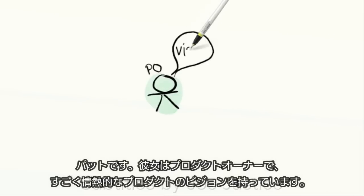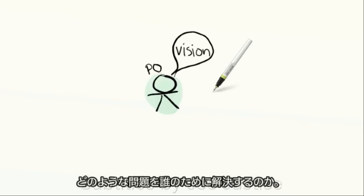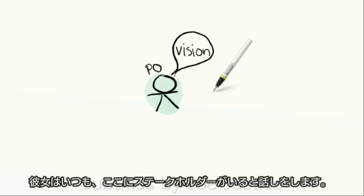She has a product vision that she's really passionate about. She doesn't know the details of what her product is going to do, but she knows why we're building the product, what problem it's going to solve, and for whom. She talks about it all the time.